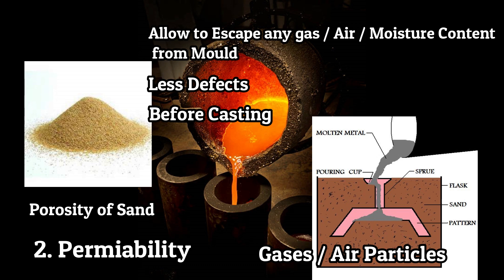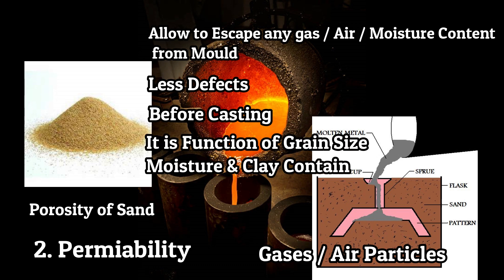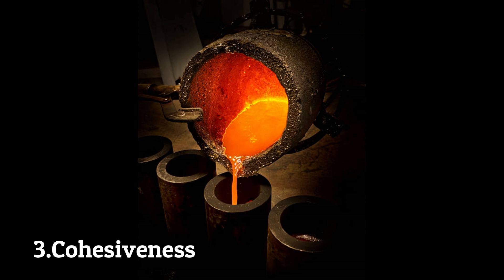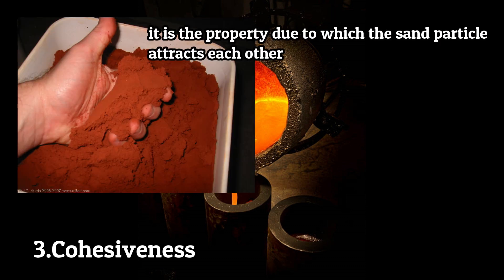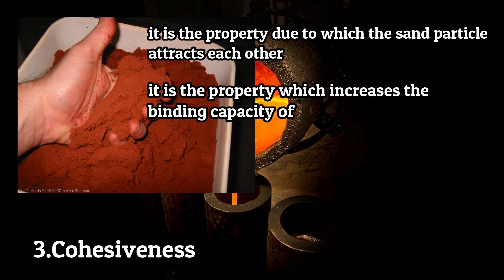Permeability is a function of grain size, moisture, and clay content. Cohesiveness is the property due to which sand particles attract each other within the mold. It is the property which increases the binding capacity of molding sand, which makes a good mold.